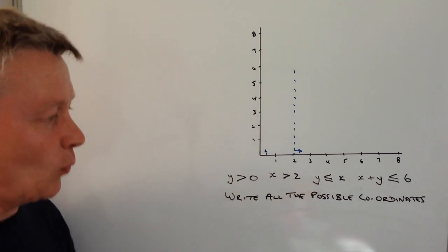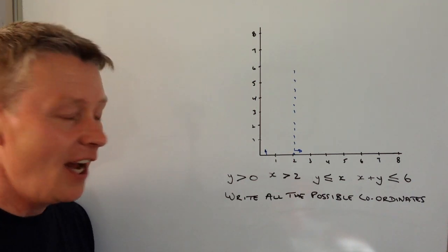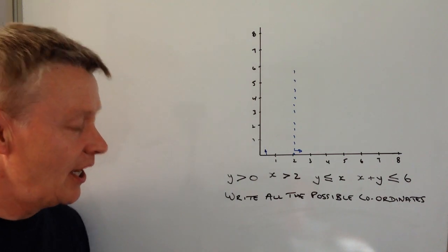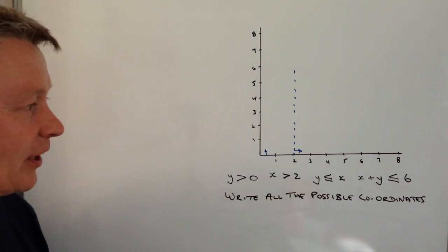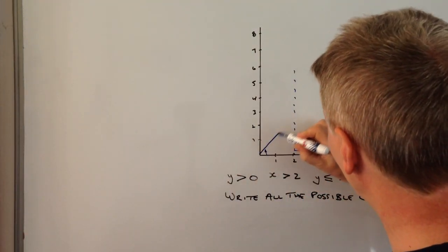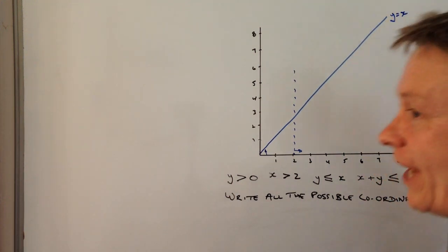This one here is y is less than or equal to x. So in this particular case I'm going to draw the line of y equals x, I'm going to make it a solid line because it does include, it could include the values of x. I'm just going to turn my back to the video and hopefully they'll draw that line relatively quickly for you. It's going to go something like that, y equals x.